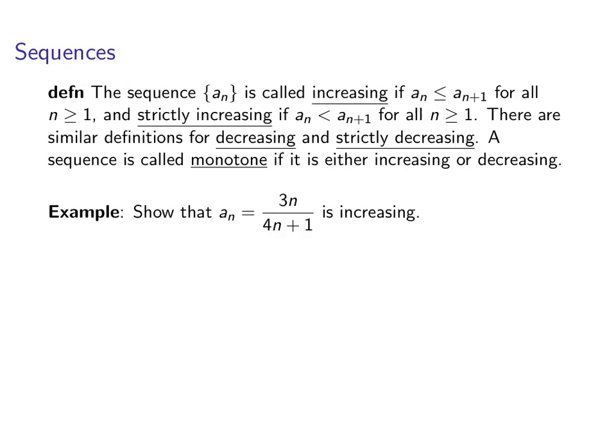Now let's show that this sequence 3n over 4n plus 1 is increasing. And the way we're going to do that is by showing that a sub n plus 1 minus a sub n is bigger than 0.